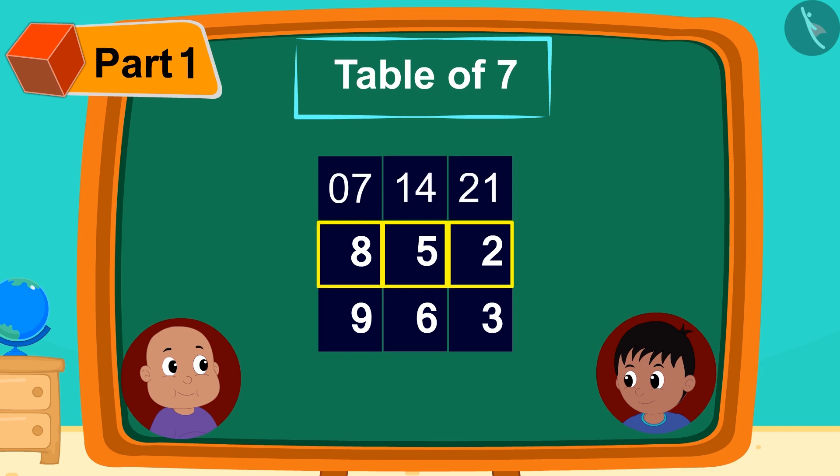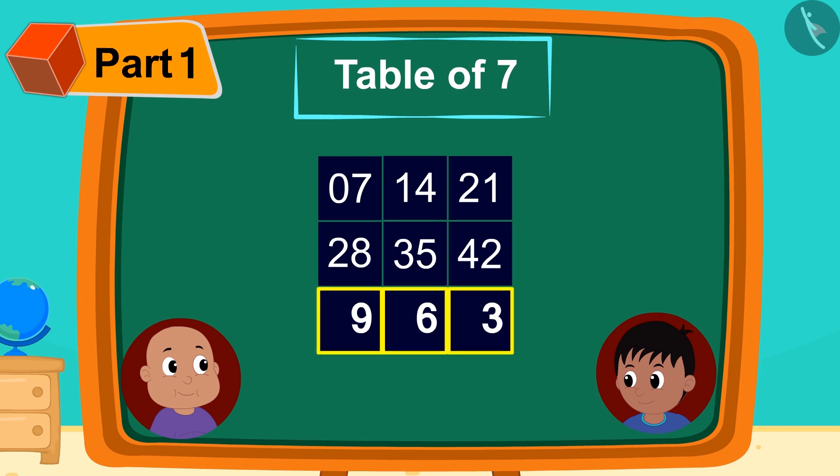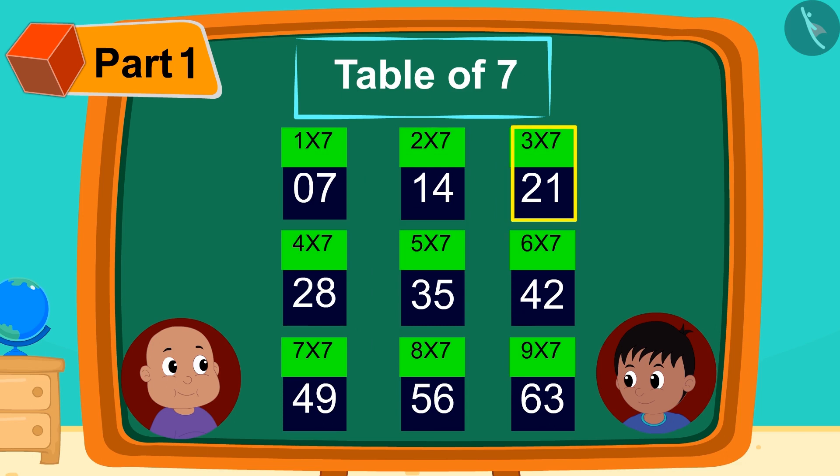Then, next to the digits in the second line, he wrote 2, 3, 4. And in front of the digits of the third line, he wrote 4, 5, 6. Here we have our table of 7 ready.